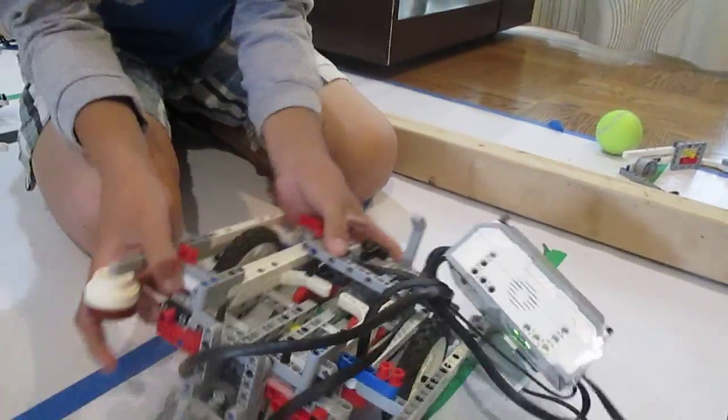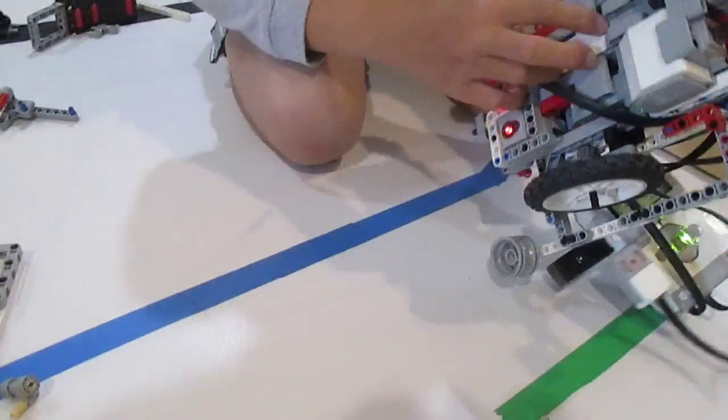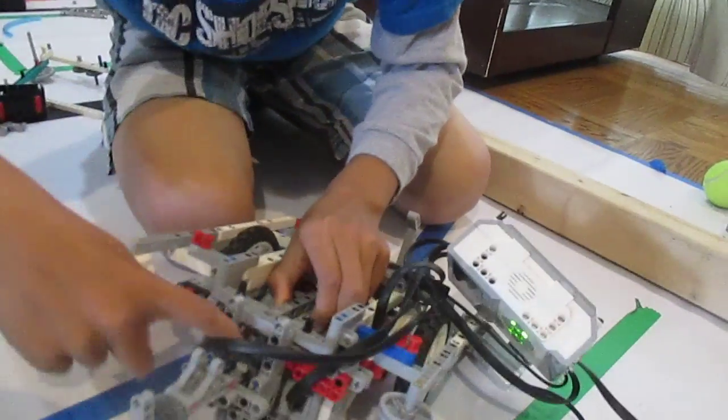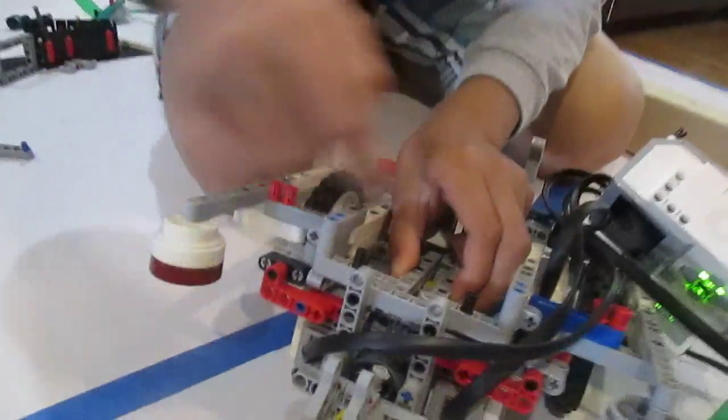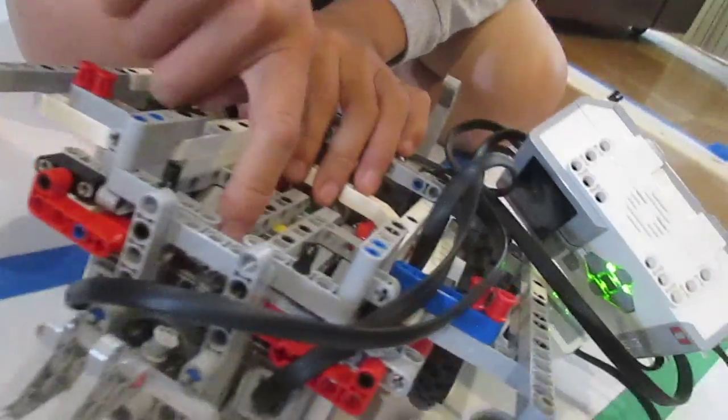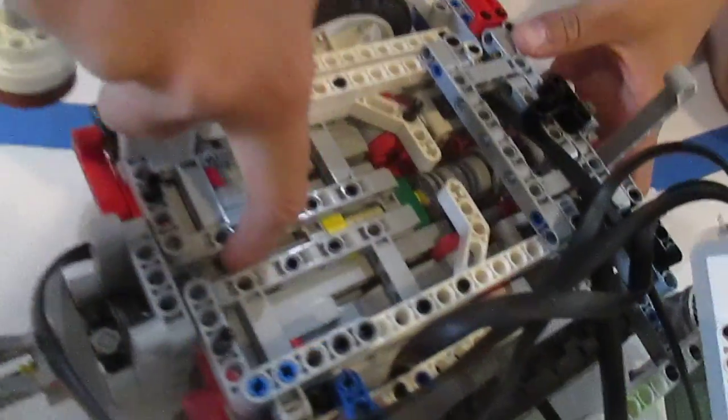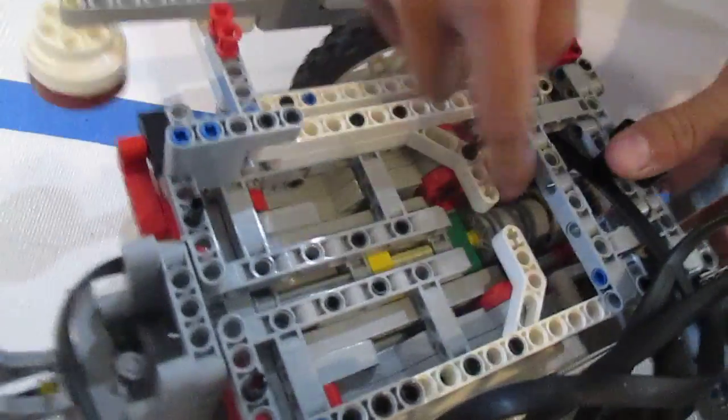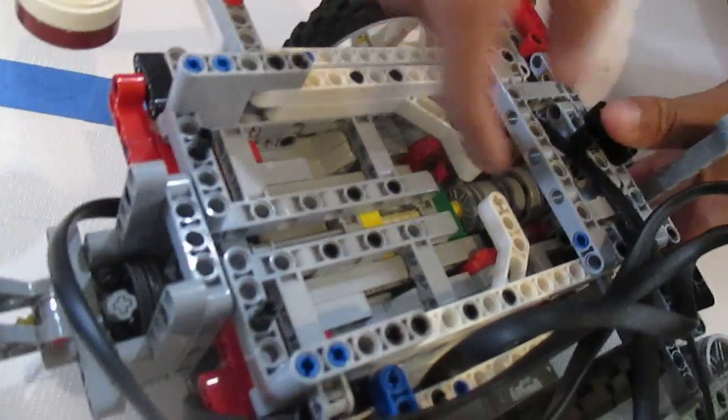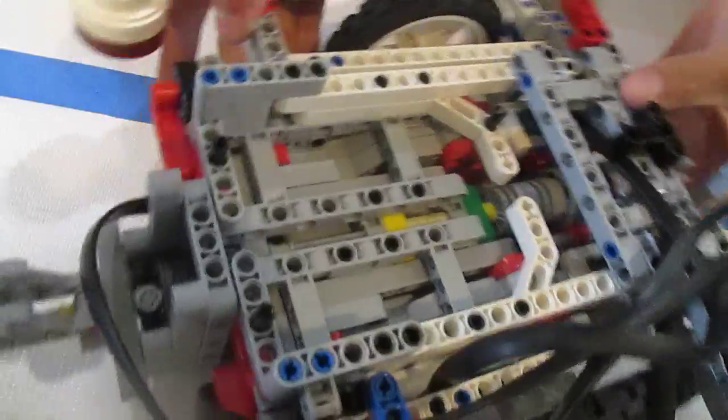Then this medium motor here spins this large gear down there, which then spins this smaller gear up here, which spins an axle, which then spins this dog gear here, which then spins that.